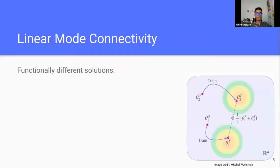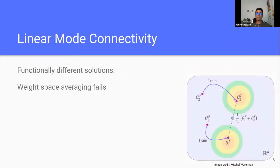There are a couple of works in the literature that try to solve either one of these requirements. The first work, already introduced by Jonathan a couple of hours ago, shows that we can start from two initializations independently and train two networks. We know that training from two initializations leads to two different basins, so we have functionally diverse solutions. But the problem is that they don't reside in one basin, so weight averaging simply fails.